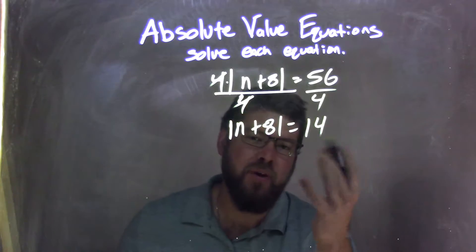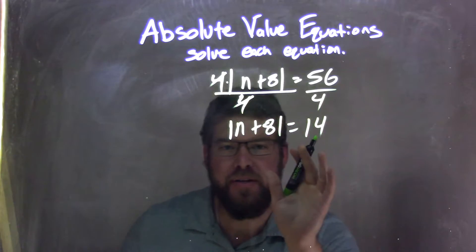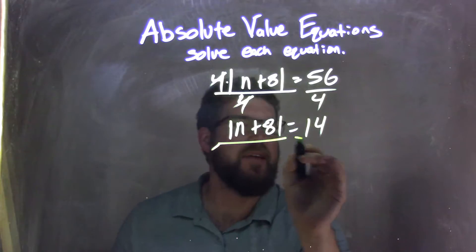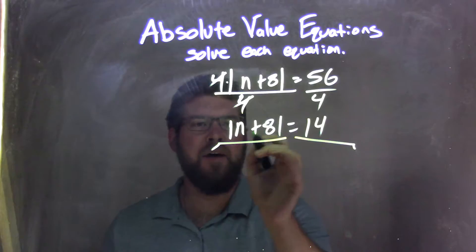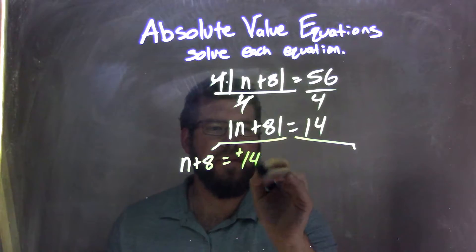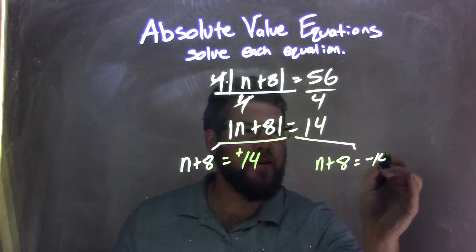Now, our next step gets rid of the absolute value by breaking this apart into two equations. The absolute value is isolated, so now we can separate this out. We're left with n+8 equals positive 14, and n+8 equals negative 14.